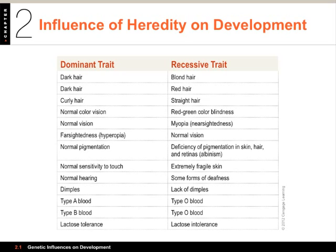We have dominant traits and recessive traits. If you were to receive an allele for dark hair from one parent and blonde hair from another, most likely you would have dark hair. Dark hair is also dominant over red hair. Looking at dimples near the bottom of the chart, if one parent has the genes for dimples and the other doesn't, you probably will have dimples - that's dominant. Interestingly, normal color vision is dominant, and normal vision is dominant over nearsightedness, but farsightedness is dominant over normal vision.